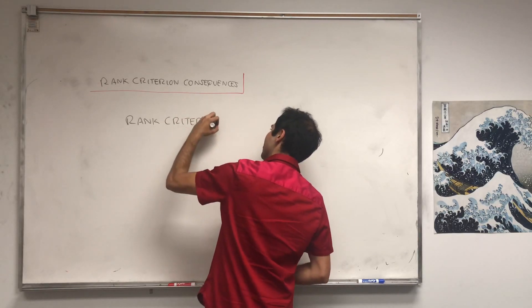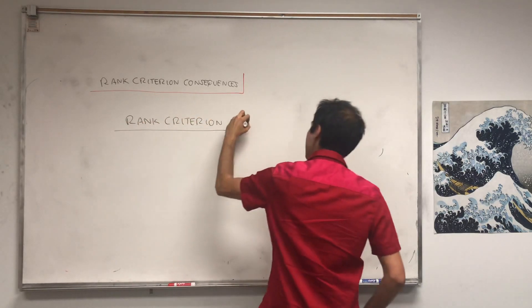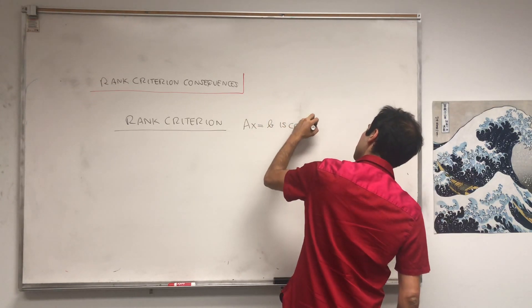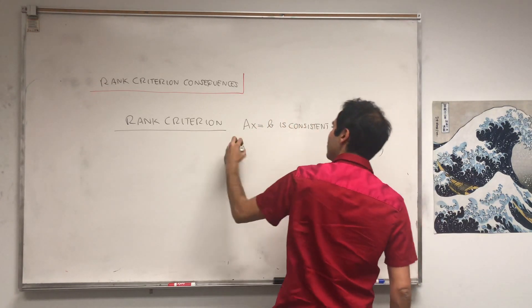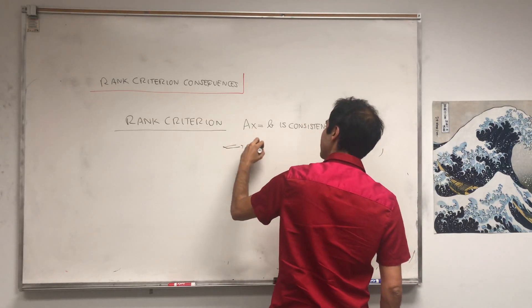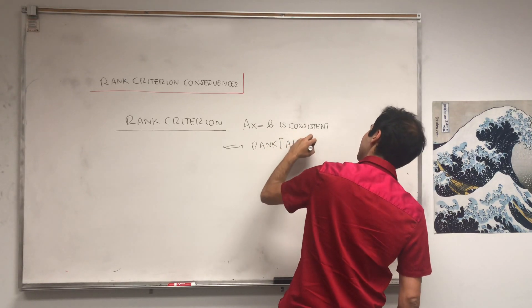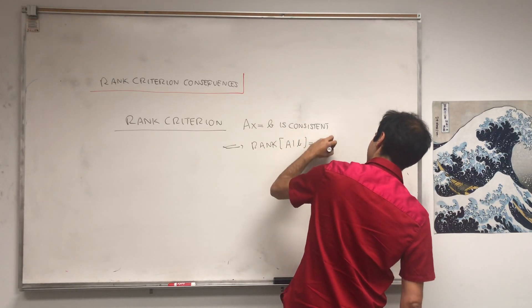It says the following: AX equals B has a solution if and only if the rank of the augmented matrix equals the rank of the original matrix.